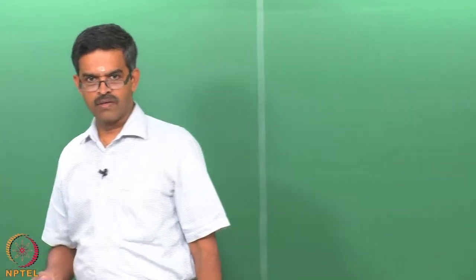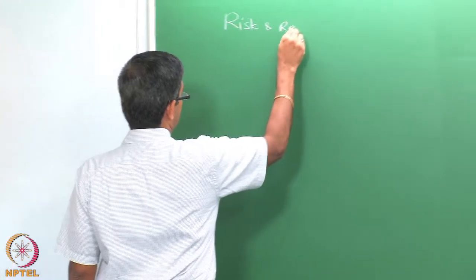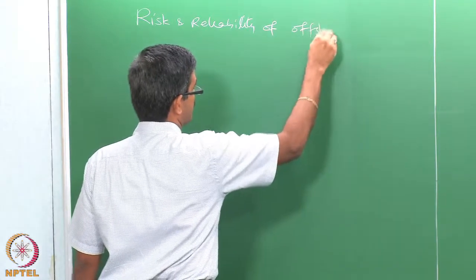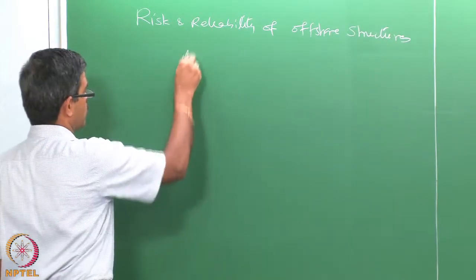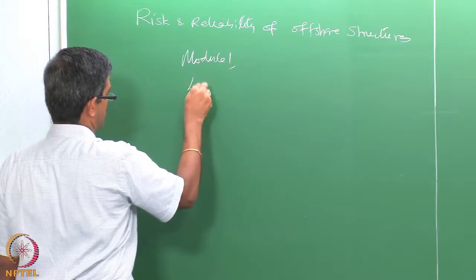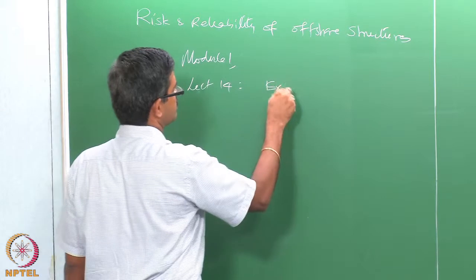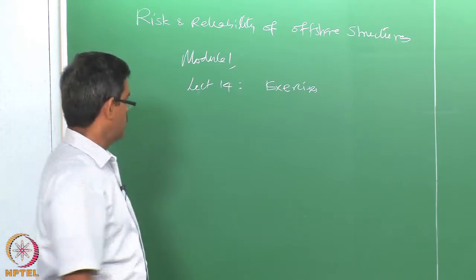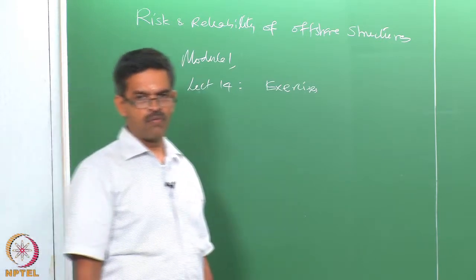Friends, let us discuss module 1 lectures on Risk and Reliability of Offshore Structures. We are talking about lecture 14, which is going to give you some exercises for understanding the first module. This will be the last lecture in module 1 of the online course on Risk and Reliability of Offshore Structures.